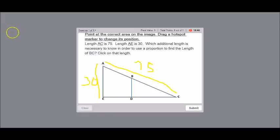So really, I can pull that triangle off. And that length would be 75. And then that length would be 30. Then the question is, which additional length is necessary to know in order to find the length of BC?